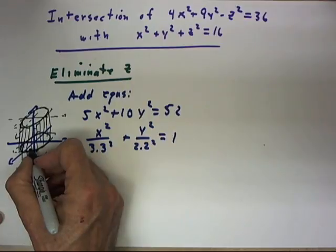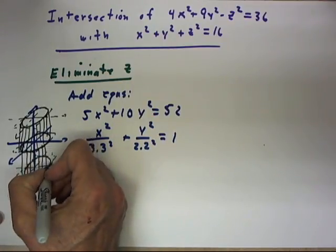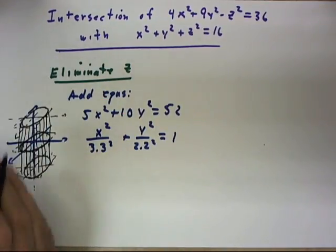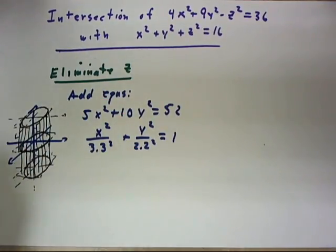So we can bring this on down to here. Now we could make this picture a little better by dotting the lines behind here. But you get the idea of this elliptic cylinder.